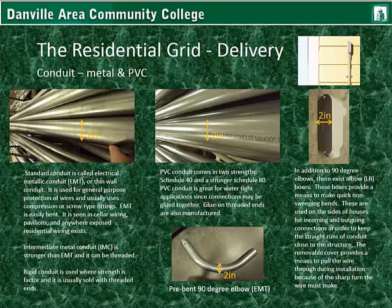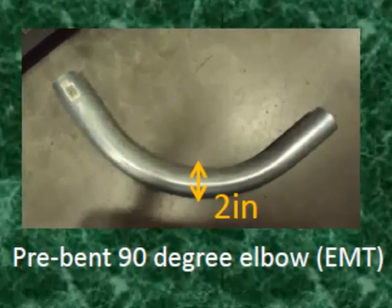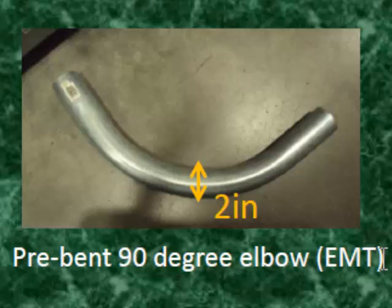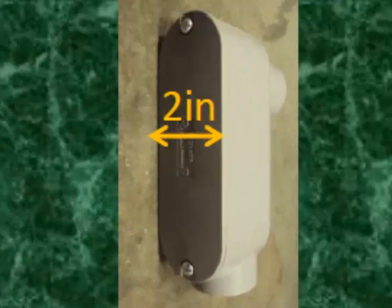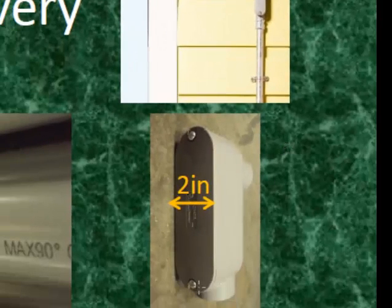At the bottom there's a pre-bent 90 degree elbow. In addition to 90 degree elbows, there also exist LB boxes. These boxes provide a means to make quick, non-sweeping bends. These are used on the sides of houses and buildings for incoming and outgoing connections in order to keep the straight runs of conduit close to the structure. The cover provides a means to pull the wire through during installation because of the sharp turn the wire must make — you can remove this cover, pull it out, and push it through.